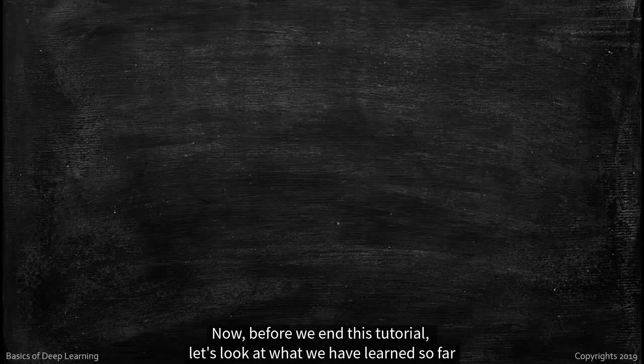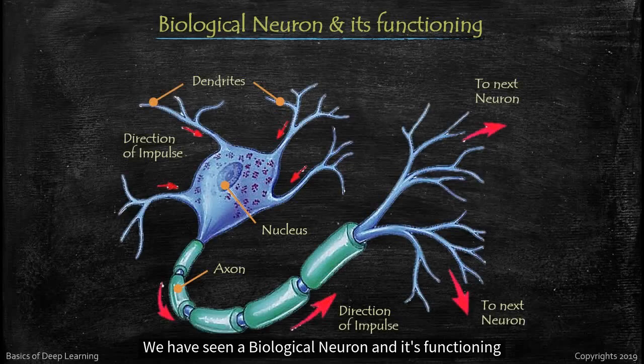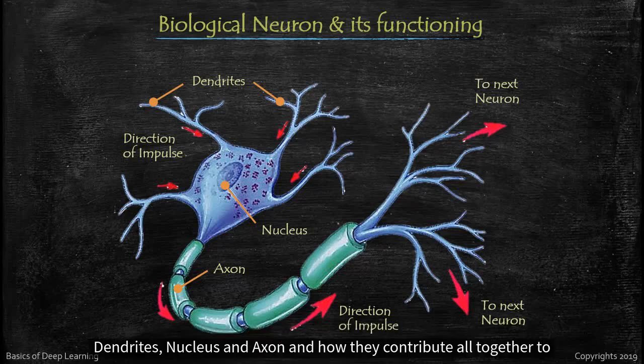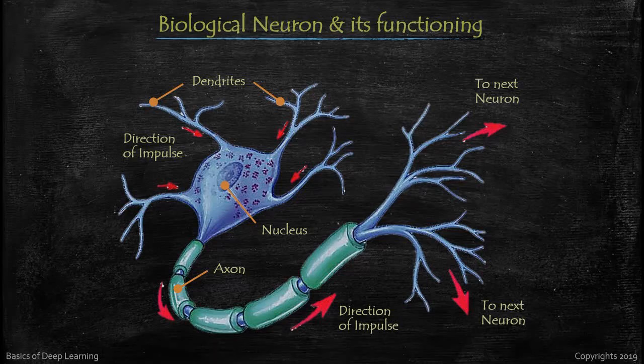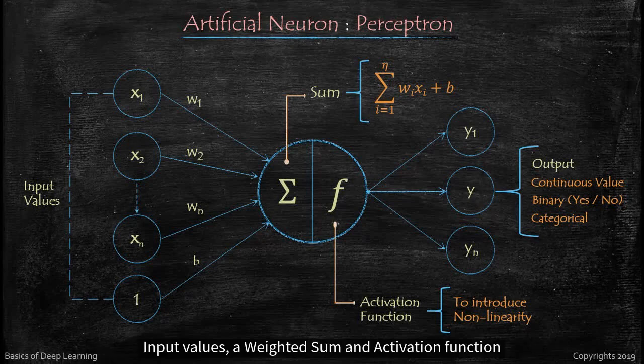Let's look at what we have learned so far as a quick recap. We have seen a biological neuron and its functioning. We have seen the anatomy of biological neuron, its main three parts: dendrites, nucleus and axon, and how they contribute all together to receive and transmit signals from one neuron to another neuron.